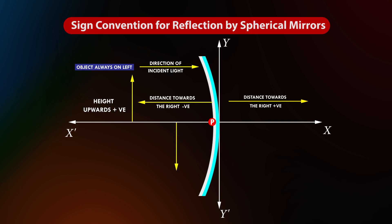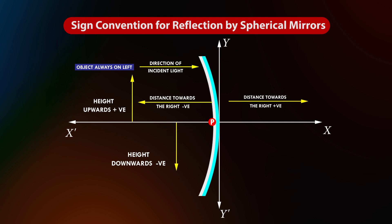Height below the principal axis: Distances measured perpendicular to and below the principal axis along the negative y-axis are considered negative. This convention ensures that heights below the principal axis are assigned negative values. These sign conventions are fundamental for analyzing and solving problems related to spherical mirrors.